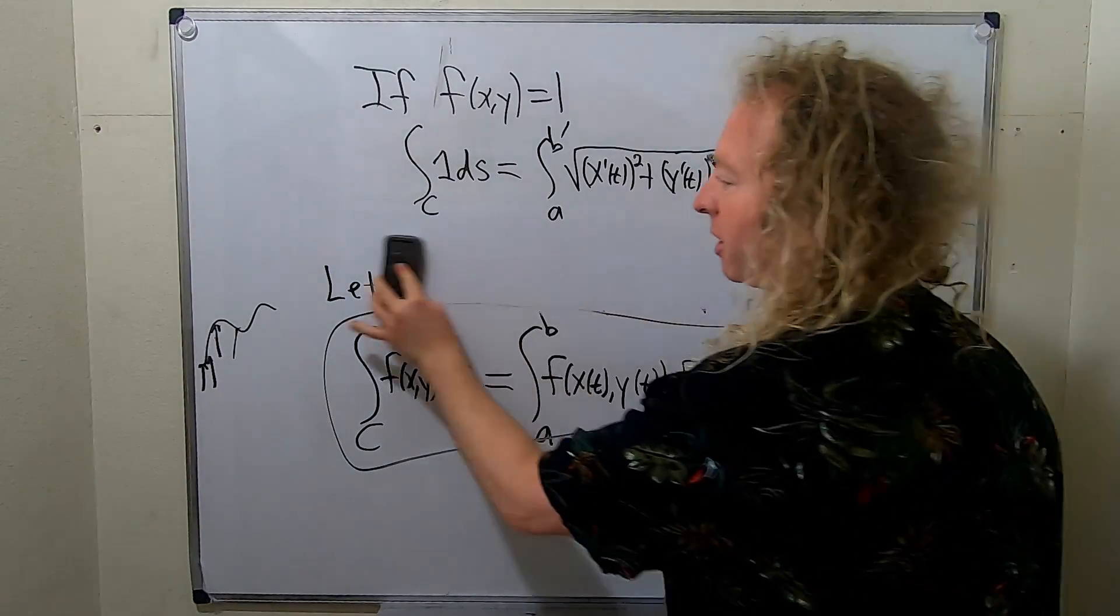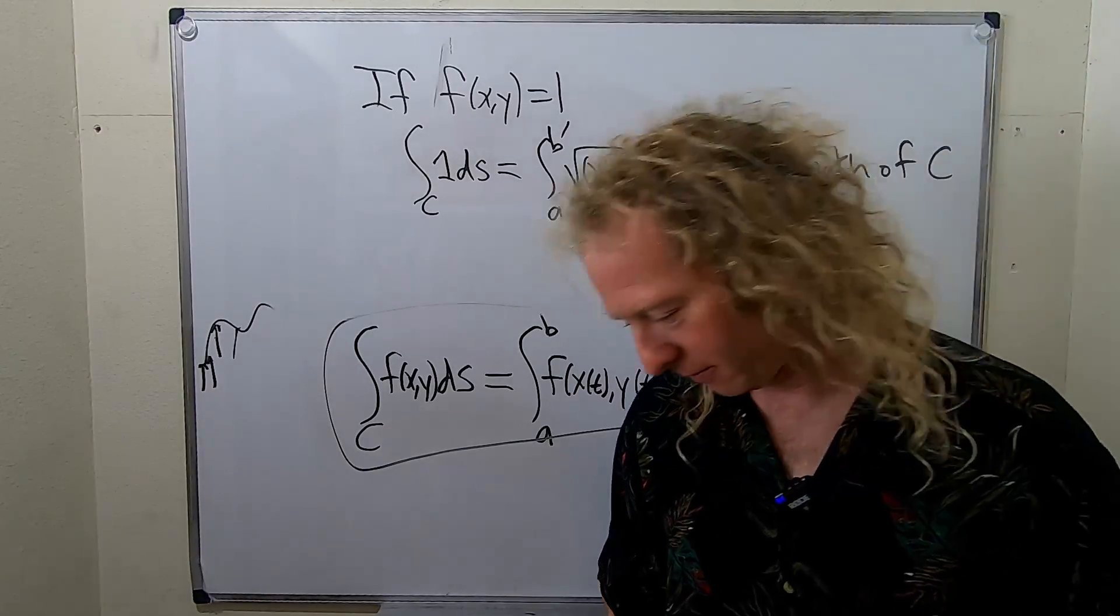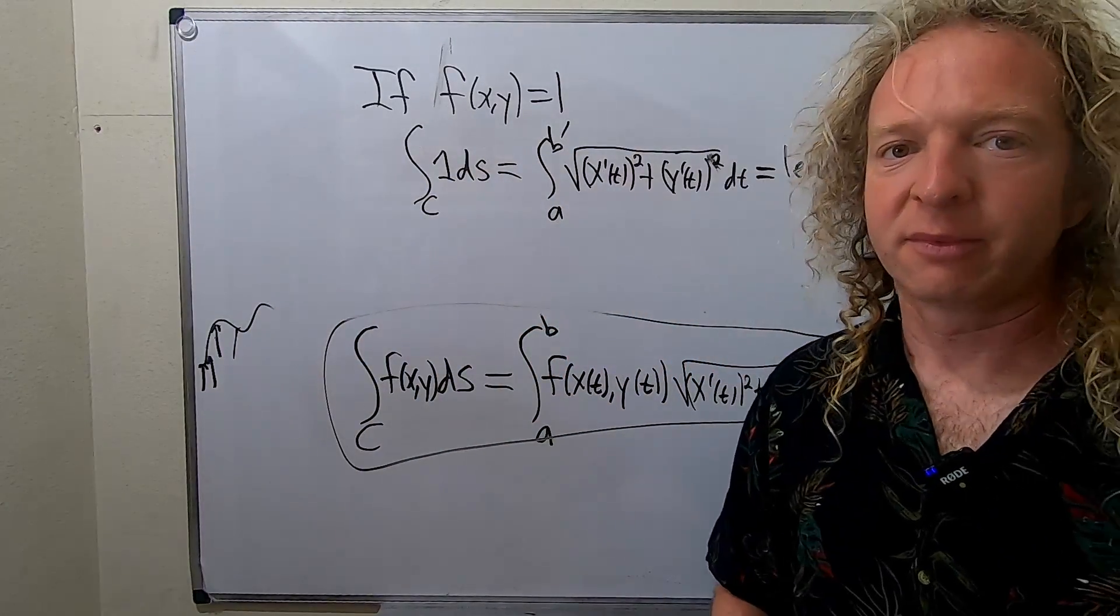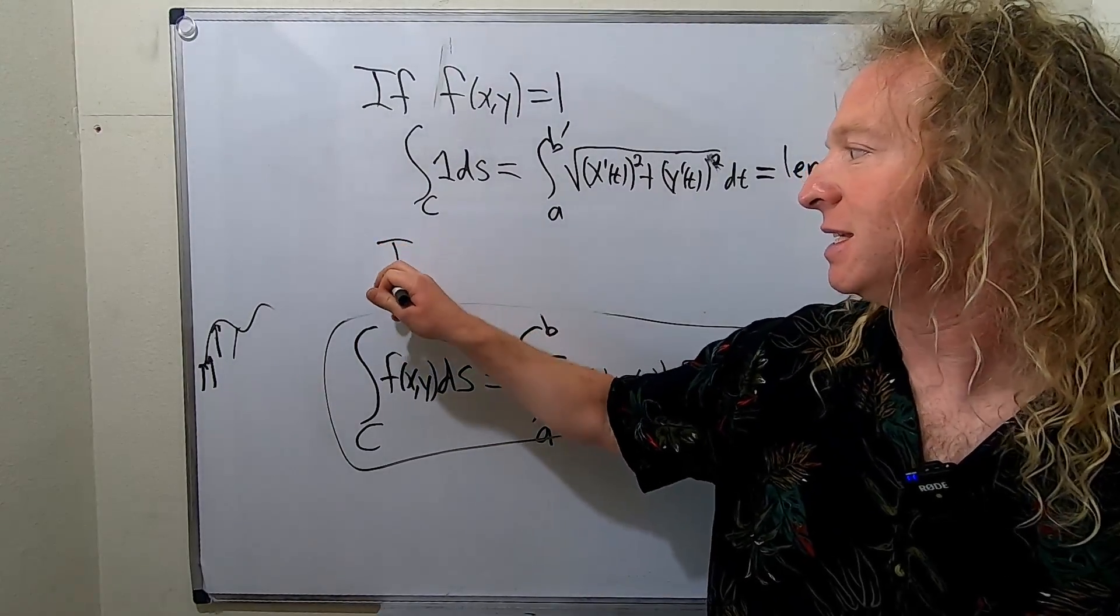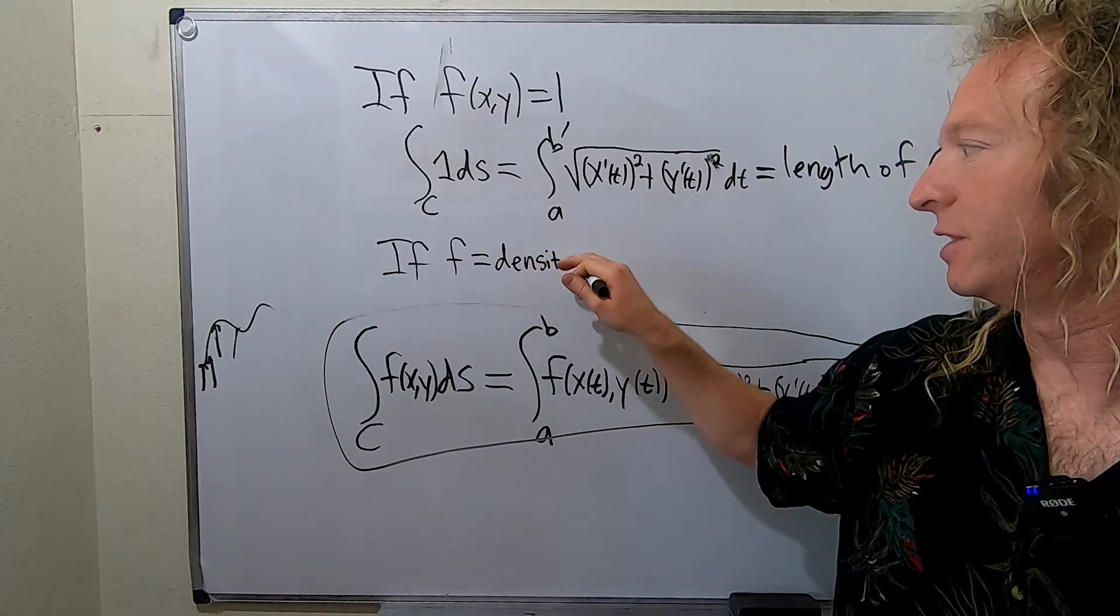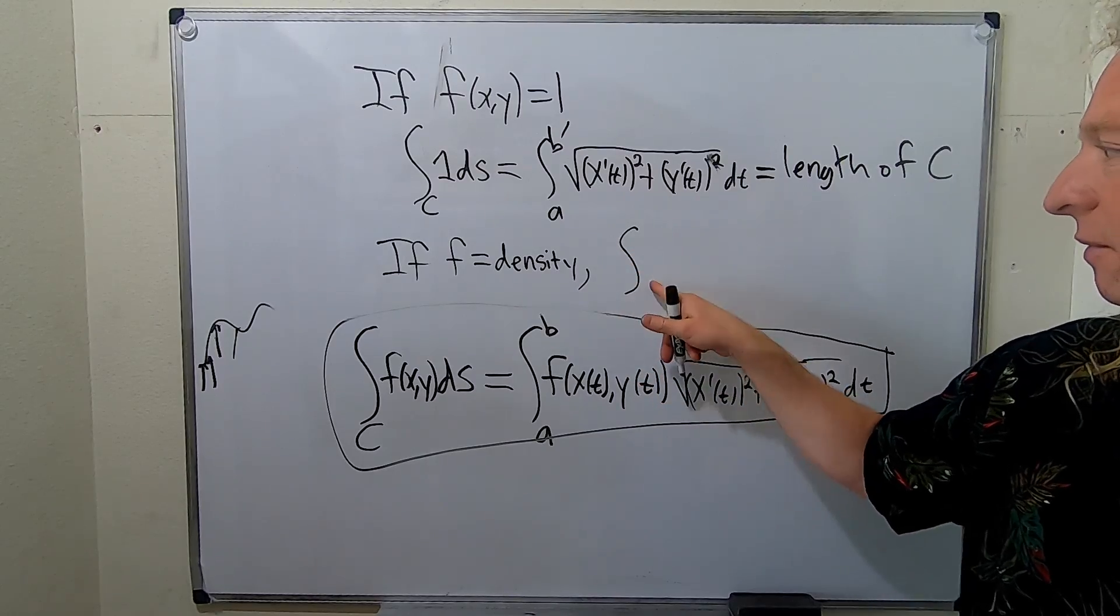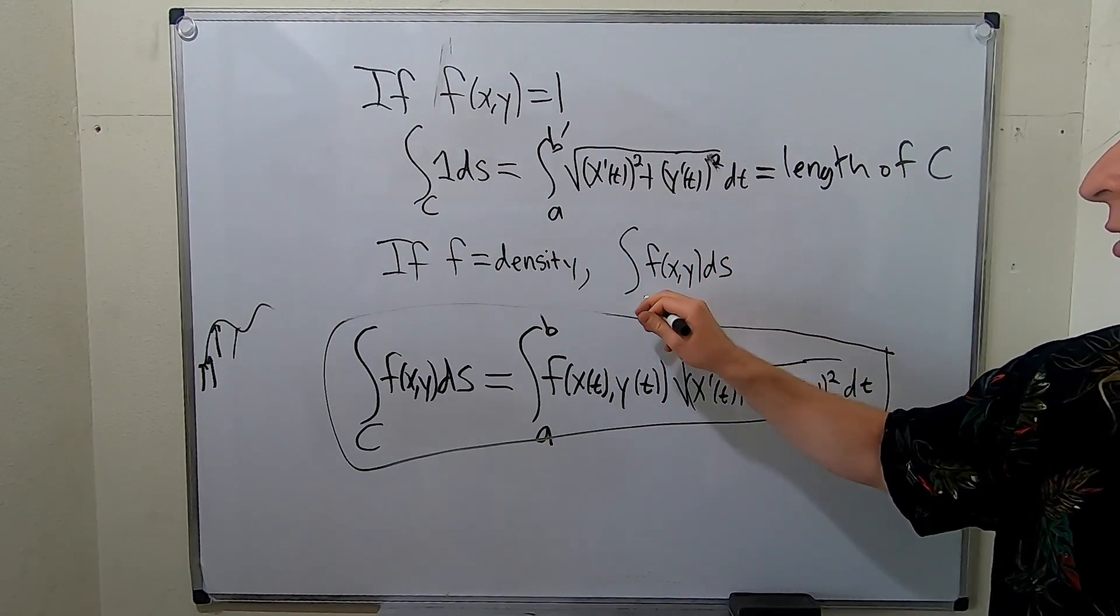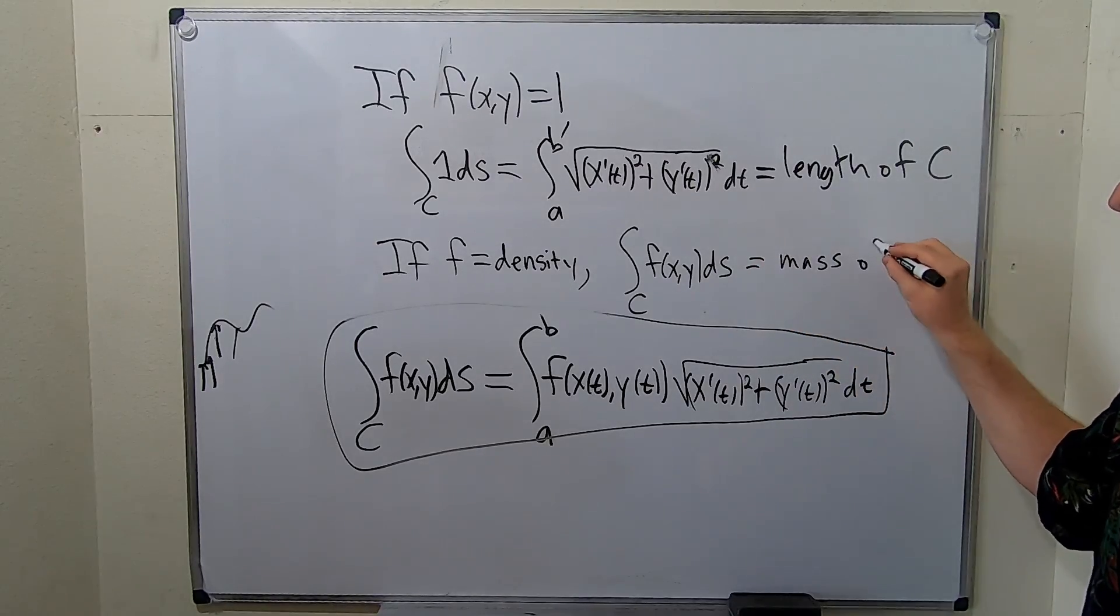And then there's one more case I want to talk about. So the next case is if f is a density. So if f is equal to the density, from physics, if f is a density, then this bad boy, f(x,y) ds over the curve C gives you the mass of C.